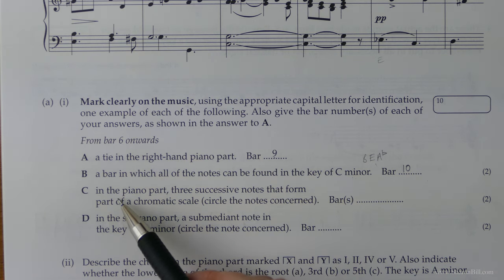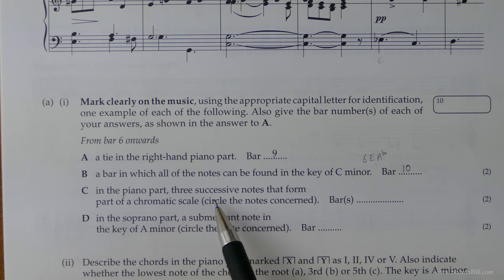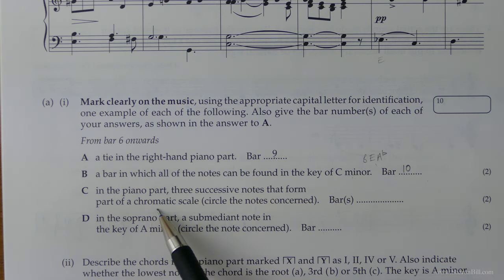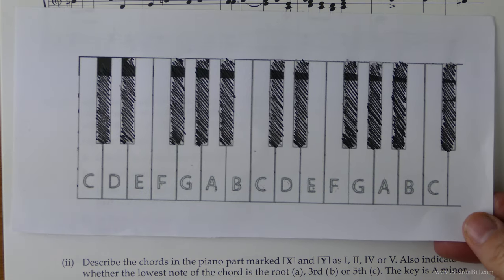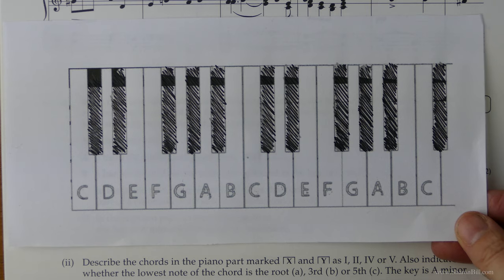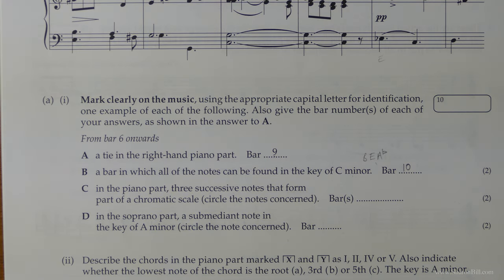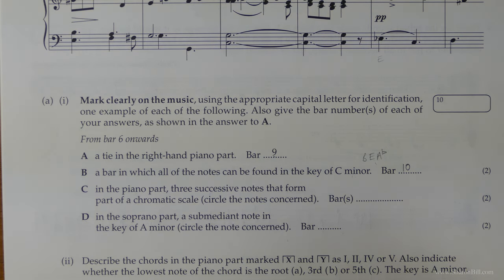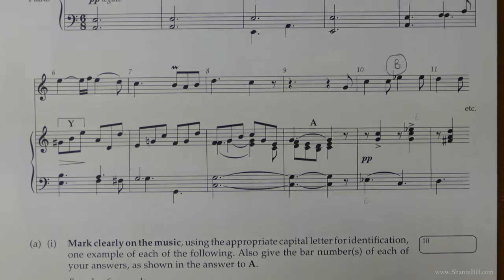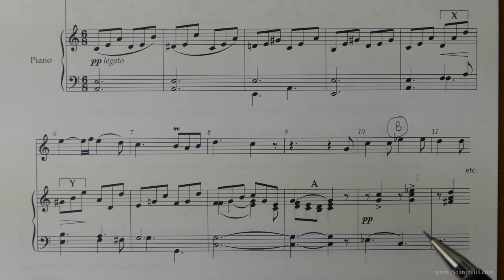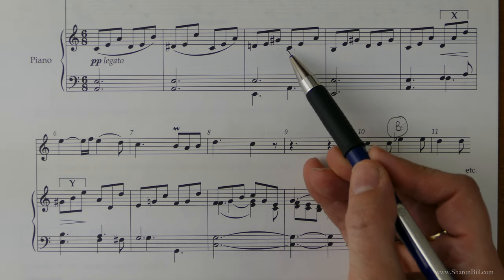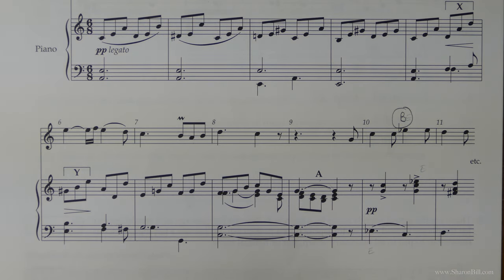And so now we're going to be looking in the piano part, and we're looking for three successive notes, so three notes next to each other that form part of a chromatic scale. Now I find it helpful to just visualize or sketch out a piano keyboard. And again, what we're looking for is some accidentals. We're looking for some sharp signs or so on to just give us a clue that we're raising in semitones. Now it's the piano part that we're looking for, and we're also looking for notes that are going to be going next door to each other. So these are far too spread apart.